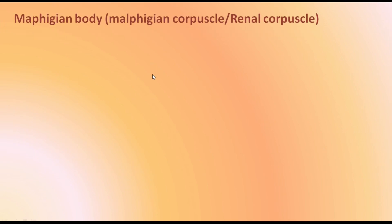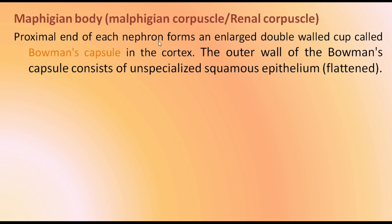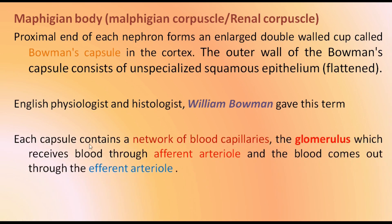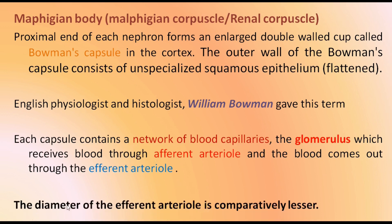The Malpighian body is also called the Malpighian corpuscle or renal corpuscle. The proximal end of each nephron forms an enlarged double-walled cup-like structure called the Bowman's capsule, which is present in the cortex portion of the kidney. The outer wall of the Bowman's capsule consists of unspecialized squamous epithelium or flattened cells. An English physiologist and histologist William Bowman gave this term. A point to be noted is that the diameter of the afferent arteriole is comparatively greater than the efferent arteriole.